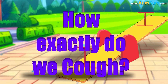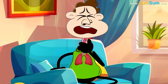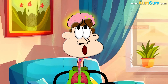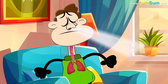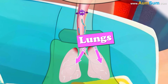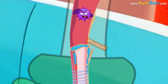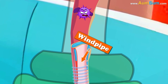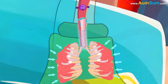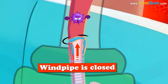How exactly do we cough? When anything irritates our breathing passage, our brain activates the cough response. First, we gasp in a large volume of air into our lungs. Next, our epiglottis closes, shutting off the windpipe. Then our rib muscles begin to contract, putting pressure on the lungs, but as the windpipe is closed, the air can't move out, so more pressure builds up.